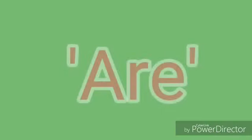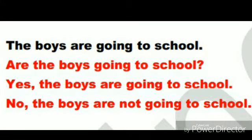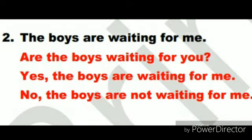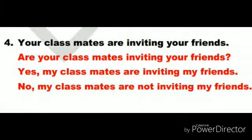Now we are moving on to the next B form verb — 'are.' We use 'are' for present tense and for plural. You can use the contraction form 'aren't' for the negative answer instead of 'are not.' 'The boys are going to school.' 'The boys are waiting for me.' 'The ladies are buying vegetables.' 'Your classmates are inviting your friends.'